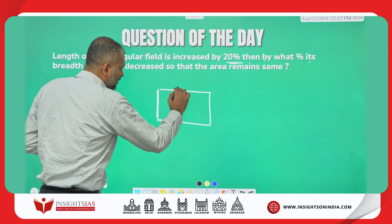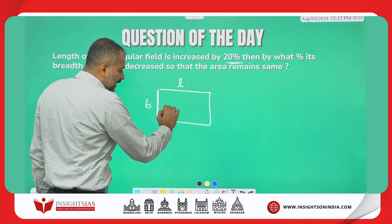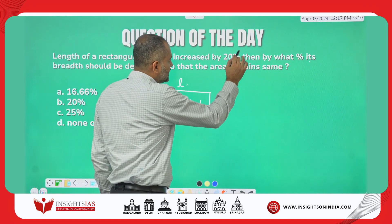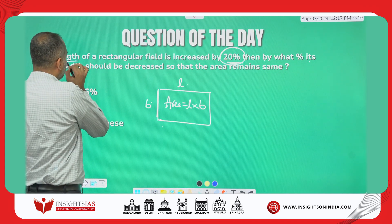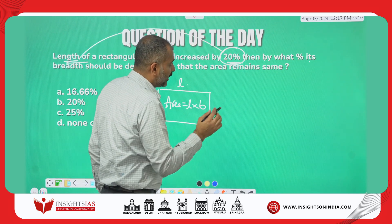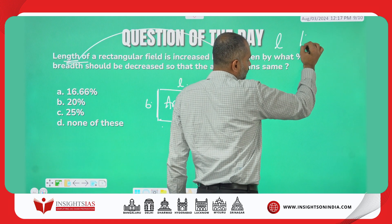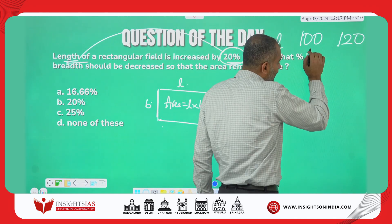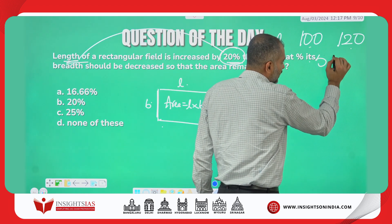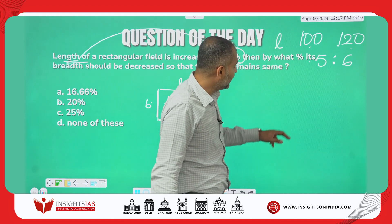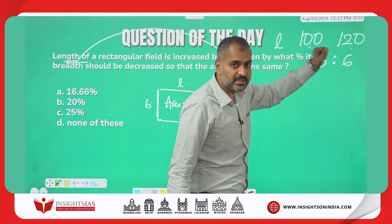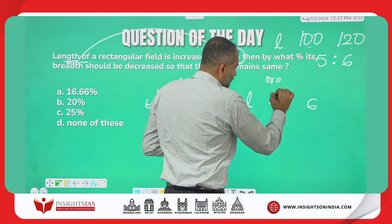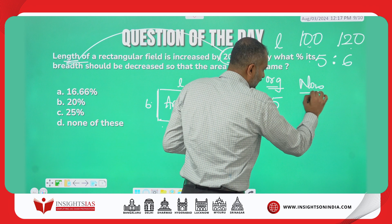Look here — this is a rectangle. This is the length, this is the breadth. Area = length × breadth. The length is increased by 20 percent. For example, if the original length is 100, it becomes 120. Rather than using these big numbers, I will make a ratio: 100 to 120 simplifies to 5 is to 6. So originally the length was 5, and now it becomes 6.